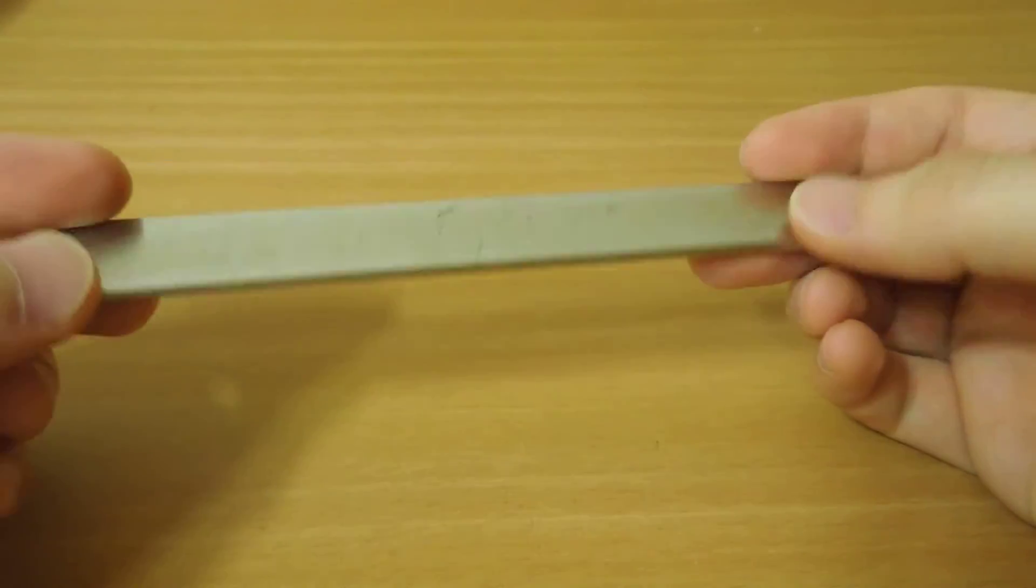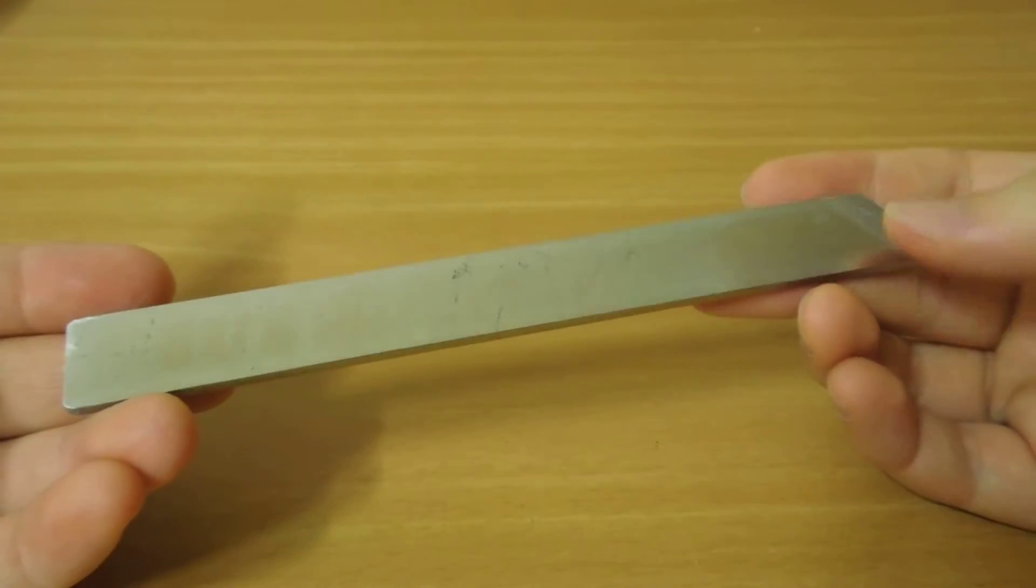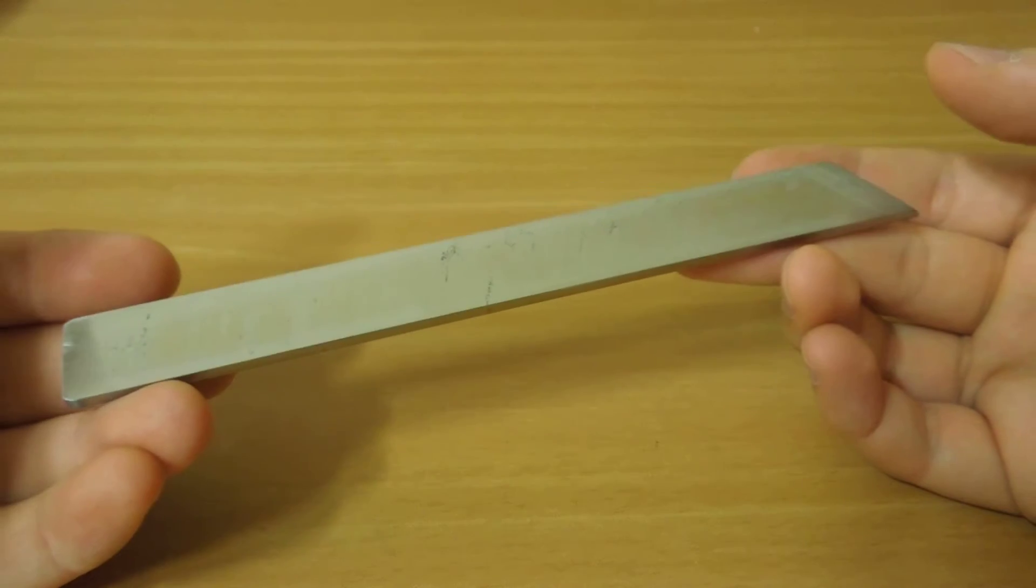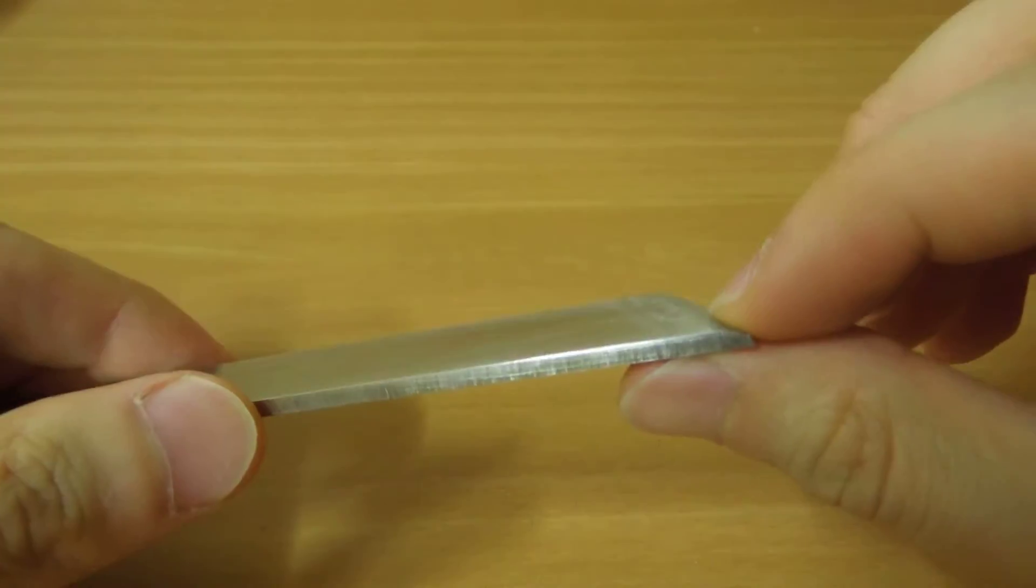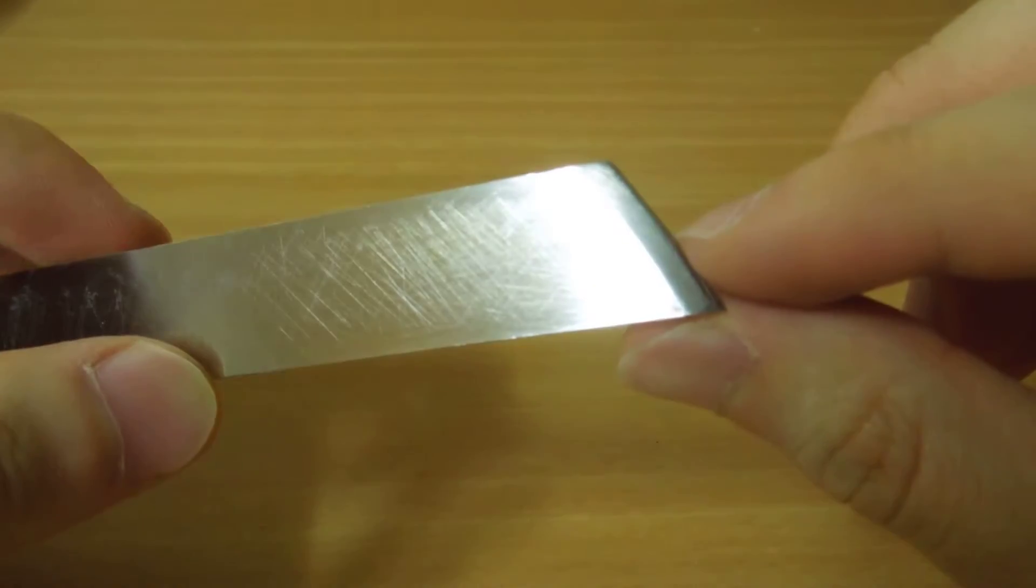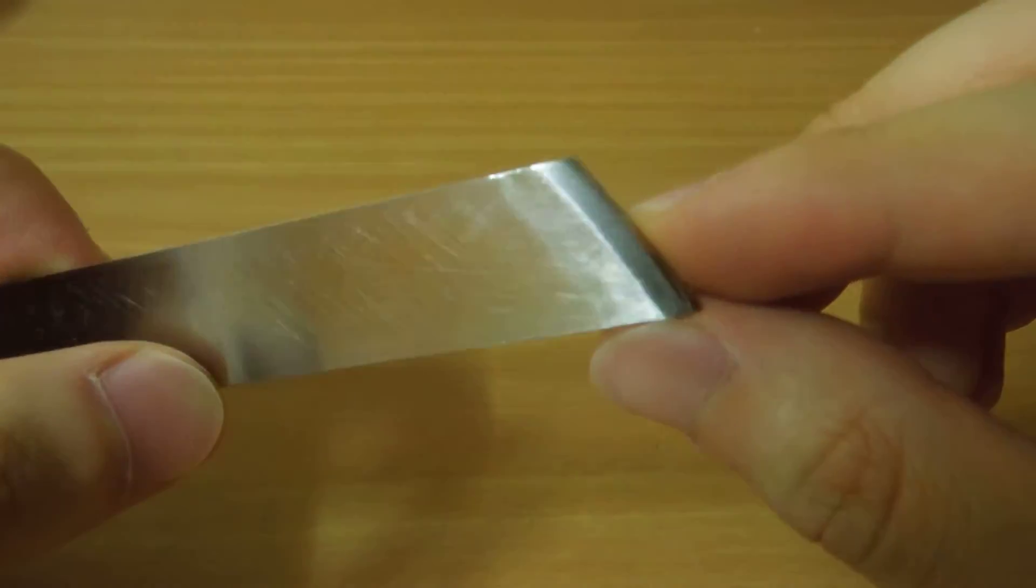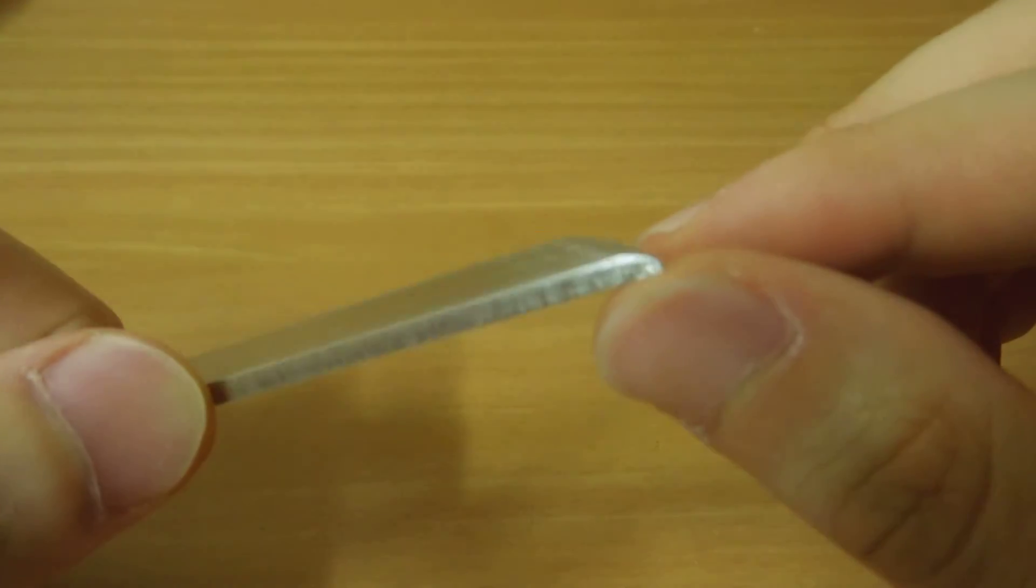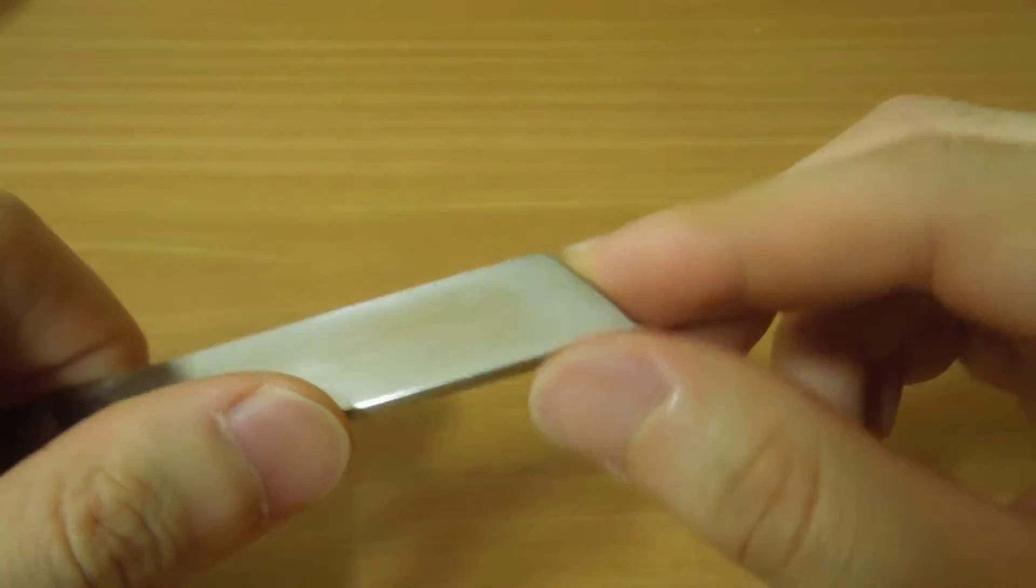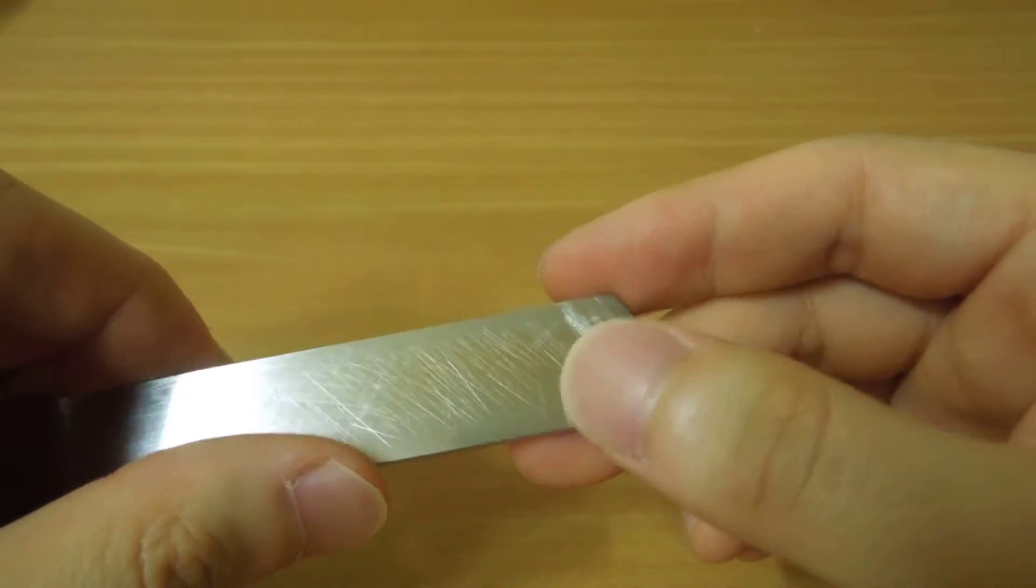Basically it's a super steel that has extremely high wear resistance and can withstand heat. This steel is so hard that even though I ground it with very coarse sandpaper for about an hour, I still have no edge. It's so hard to make a bevel on this knife.